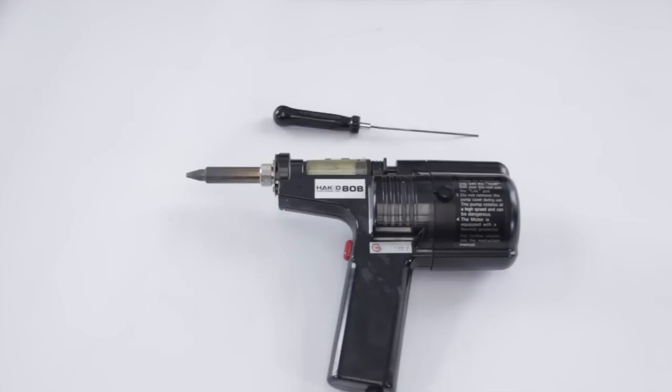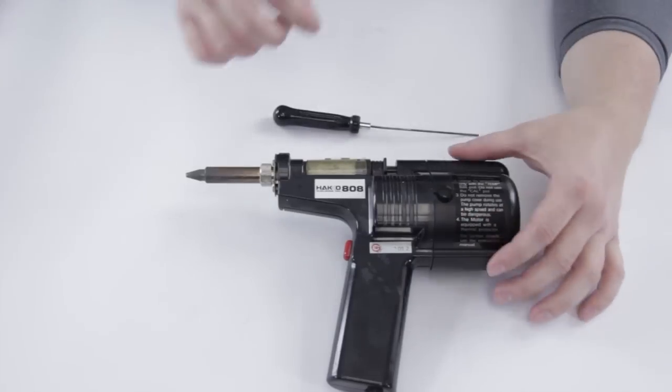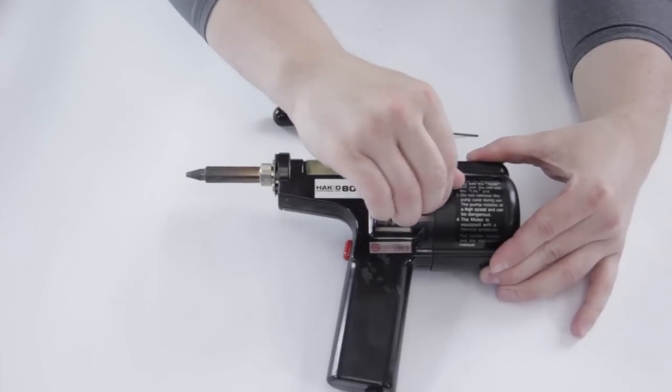In this video we're going to show you how to clean the motor on the Hakko 808 desolder gun. The first step is to remove the motor cover, and you do this by undoing the nut right here.